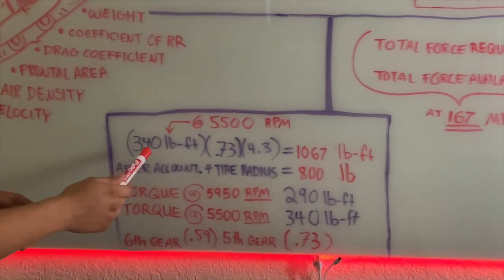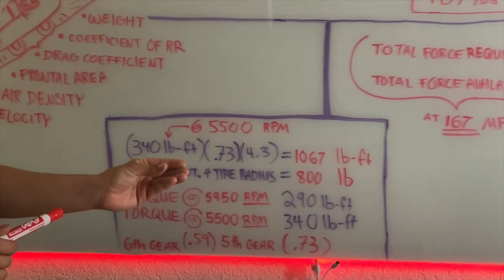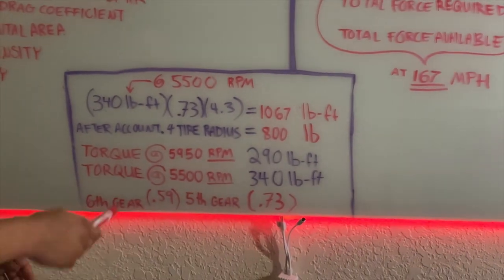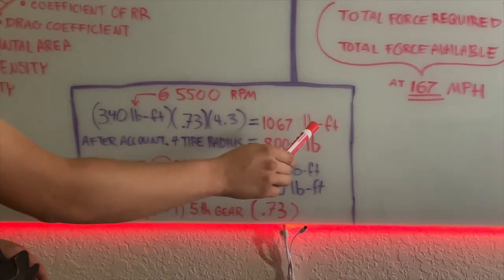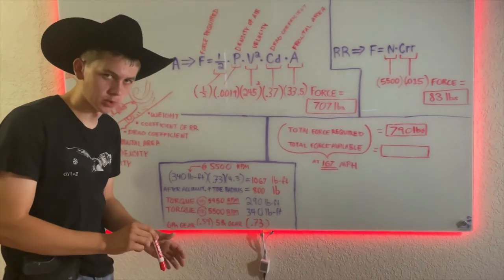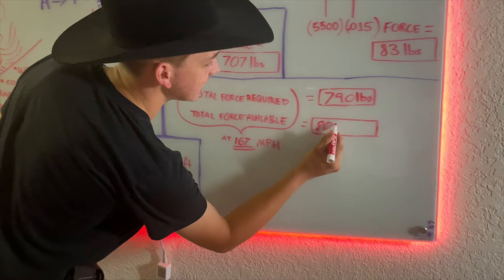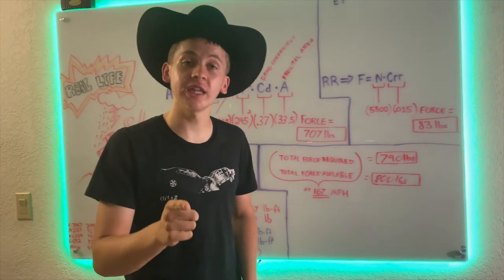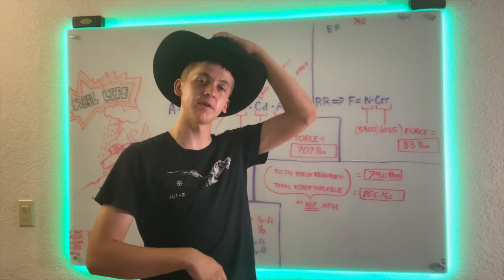How much force do we have available now? Well, we eased off the RPM down to 5500, and that brought the torque up to 340 pound-feet coming out of the crankshaft. We downshifted from sixth to fifth gear, which changed the transmission ratio to 0.73. Multiply this out again and account for tire size, and we have 800 pounds of force hitting the road. 800 pounds is enough to overcome the 790 pounds required, so we really can go 167 miles an hour.